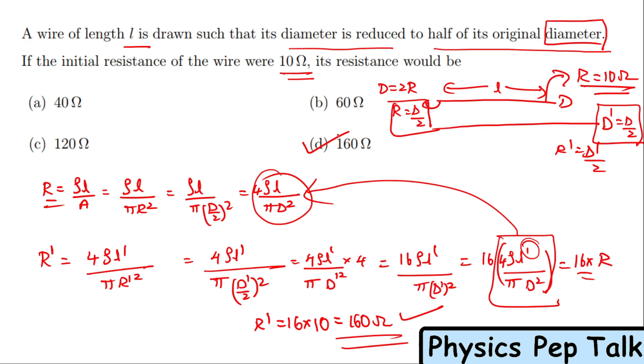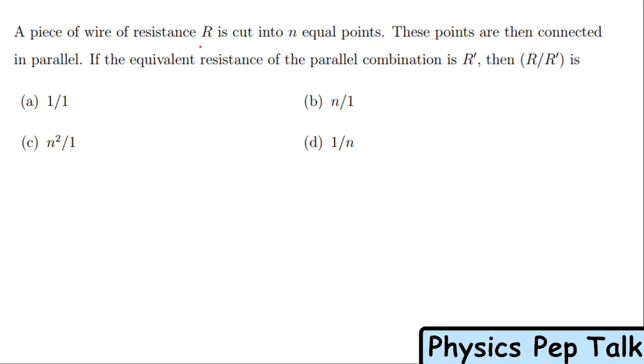Next problem: A piece of wire of resistance R is cut into n equal points. These points are then connected in parallel. If the equivalent resistance of the parallel combination is R', then what is R/R'? Initially there's a wire with resistance R. They cut this into n equal parts. If the length is the same, same material, same thickness, all pieces will have the same resistance.